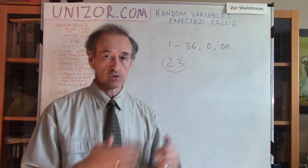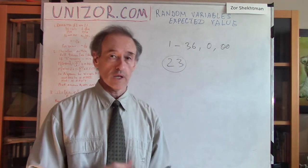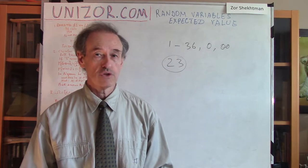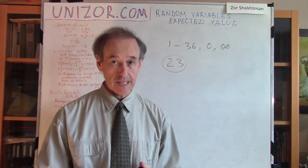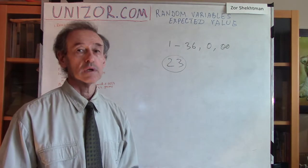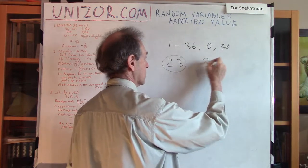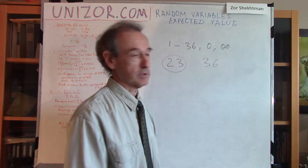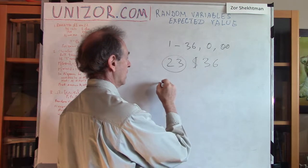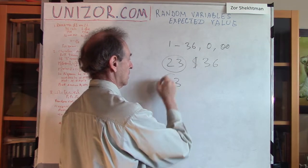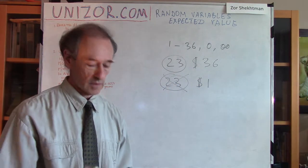If the ball falls on number 23, you win; if it doesn't, you lose. Obviously, the chances to fall on number 23, if you have 38 different partitions, are very small, and the chances to lose are very large. So we have to equalize it with some payoff. The standard payoff is: if the ball falls on the number you predicted, you will get 36 times what you bet. Let's say you bet a dollar — you get 36 dollars. But if it's non-23, you are losing your bet, which is one dollar. That's the game.